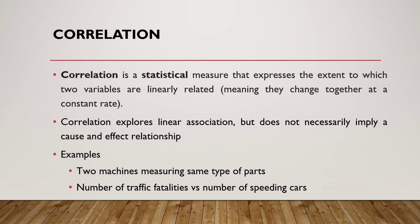Correlation is a statistical measure that expresses the extent to which two variables are linearly related — meaning they change together at a constant rate. Correlation explores linear association, which is why on the graph we have a line showing a linear relationship between temperature and sales. However, it does not necessarily imply a cause-and-effect relationship.